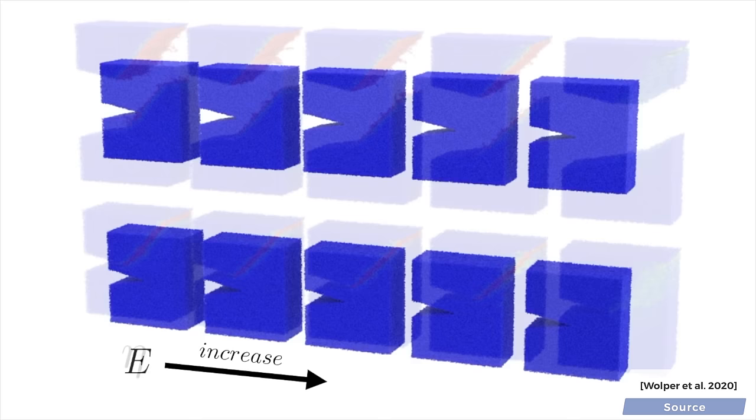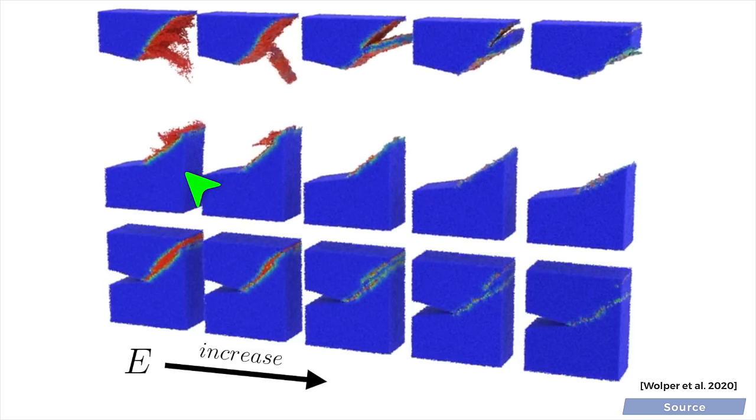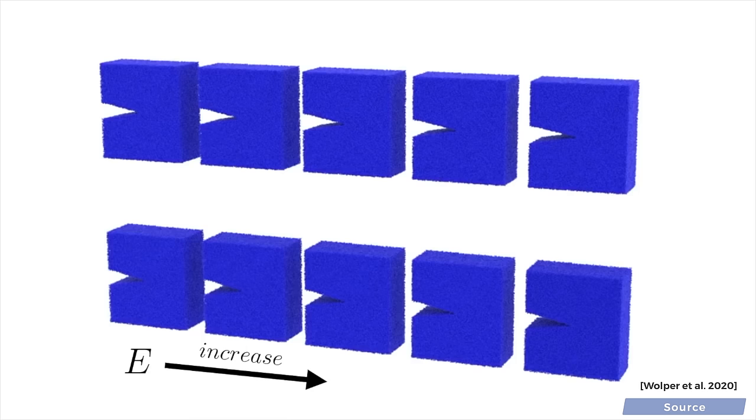We can also play with the Young Modulus, which describes the material's resistance against fractures. On the left, it is quite low and makes the material tear apart easily, much like a sponge. As we increase it a bit, we get a stiffer material, which gives us this glorious, floppy behavior.